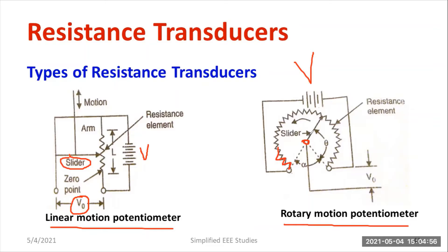With respect to the rotation of the slider, you get the output voltage. Whenever the slider receives the input voltage, the applied voltage varies as the slider changes — resistance varies, and that resistance is directly proportional to the change in voltage. So you can measure the changes in the slider in terms of voltage. As the moving body performs circular motion, you get the output voltage with respect to the motion, because the value of the resistive element keeps varying.